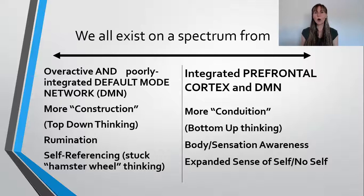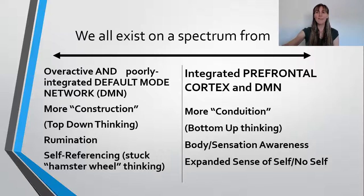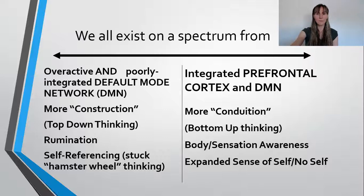The key with all these things is we're trying to integrate different brain functions, like the default mode. The 'no self' — the expanded sense of self — comes back to the neuroscience of awareness. When you look at the nine domains of integration and interpersonal neurobiology, people who have higher states of integration feel an expanded sense of self, feel connected with all life, and have greater altruism. That is what happens when you have more awareness and a more integrated brain.